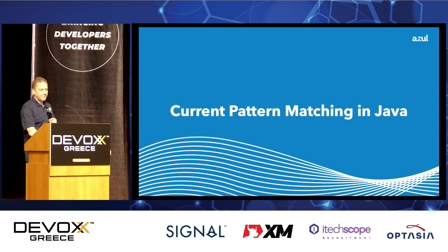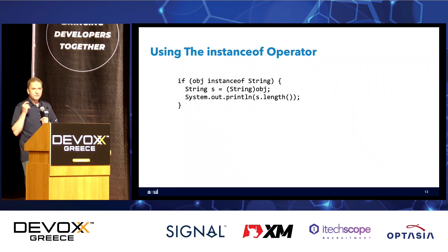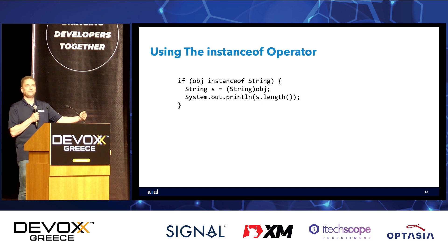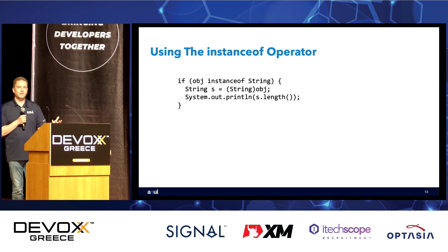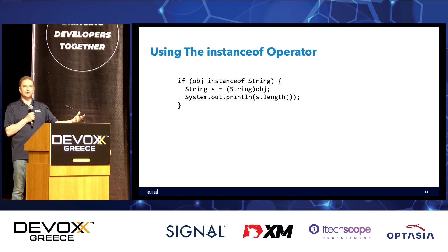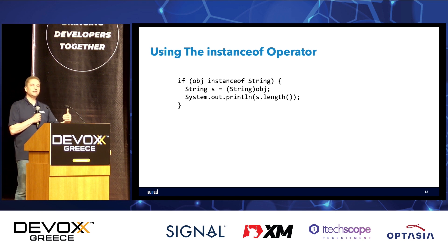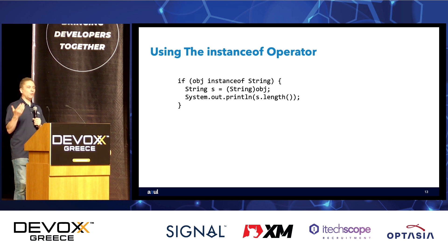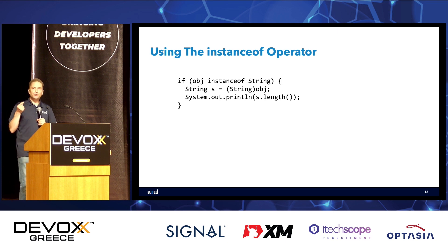Now let's move to what pattern matching actually means in Java. The first application is the `instanceof` operator, which has been in Java from the very beginning. It lets us examine the type of a reference. In this example, I say `if (obj instanceof String)` — and in order to do something with it as a String, I then have to add a line explicitly casting `obj` to a `String` variable `s`.